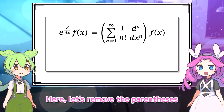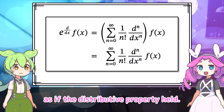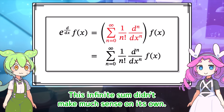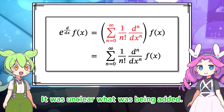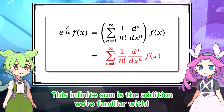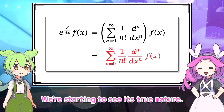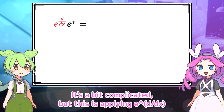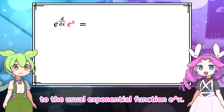Here let's remove the parentheses, as if the distributive property held. This infinite sum didn't make much sense on its own — it was unclear what was being added. But this expression makes sense. This infinite sum is the addition we're familiar with. We're starting to see its true nature. So let's calculate this expression as an example. This is applying E to the D by DX to the usual exponential function E to the X.